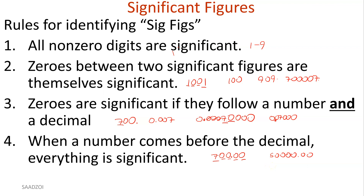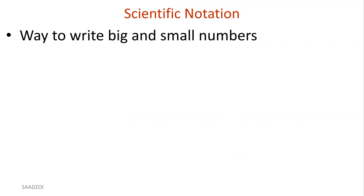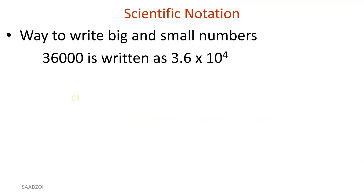Now why do we need to know that? Because that's going to help us write numbers in scientific notation. So what is scientific notation? It's a way of writing a very big number in simple form. So 36,000 can be written as 3.6 times 10 to the fourth. Your goal is to only have one number — one through nine — to the left of the decimal point. That is your mission. Zero does not count; you cannot go 0.6 times 10.